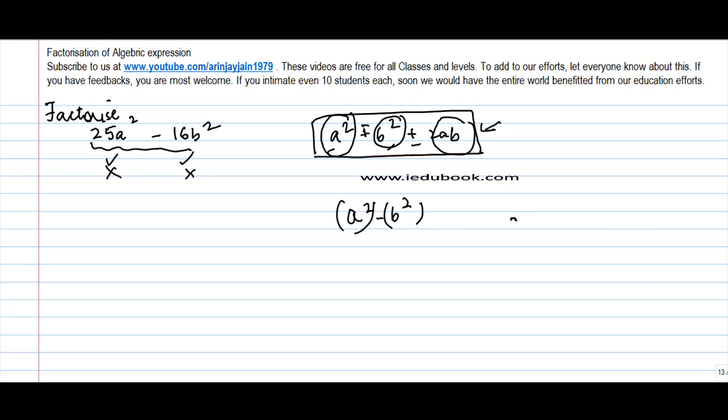So, 25a square can be written as 5 into 5, which is 25 into a into a. So, 5 is coming two times. I can write this as 5 square into a square or I can write this as 5a whole square. So, this becomes 5a whole square minus.